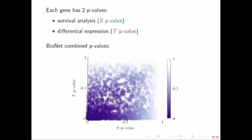I'll just call it S p-value, T p-value. Hopefully the colors are quite nice, I don't know here, but this is a scatterplot of the p-values for each gene.